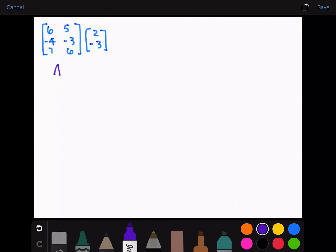Let's call this first matrix A. It has three rows and two columns. We'll call the second one matrix B. It has two rows and one column.